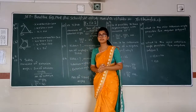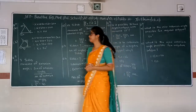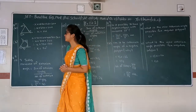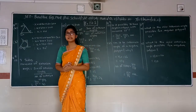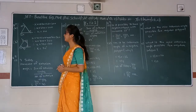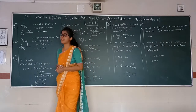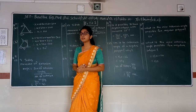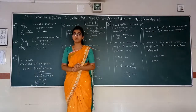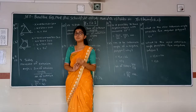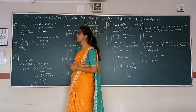Now we will start with Exercise 3.2, Question number 1. We have a figure which has values of exterior angles: 105 and 125, and we have to find x. The sum of all exterior angles will be 360.